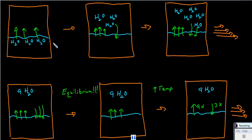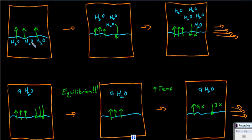Consider a case in which you put frozen water into a container with no water vapor in it. Let that water thaw, and soon it is going to be at about 25 degrees Celsius. Soon it will be liquid.